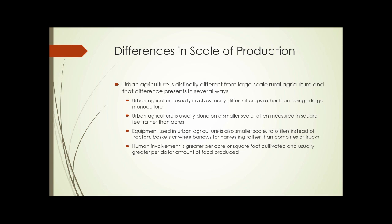In other areas, you may have 500 acres and grow five different crops. But usually there's a limit, because it's more efficient in large-scale agriculture to grow a few things rather than many different things, each of which might require a different technique, a different amount of labor, water, or fertilizer. Next, urban agriculture is usually done on a smaller scale. You don't find 1,000-acre urban agricultural operations, typically. So the scale is often measured in square feet rather than in acres.